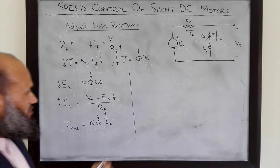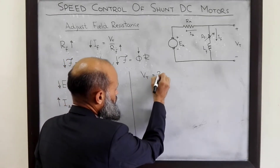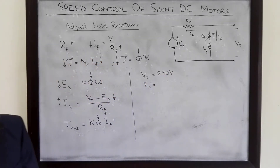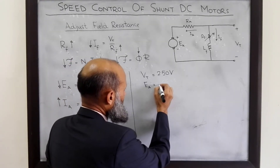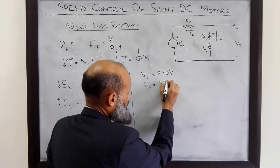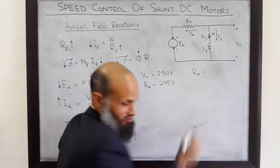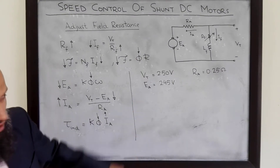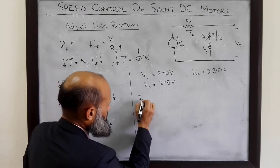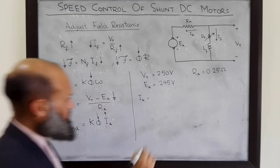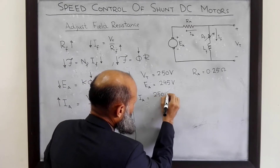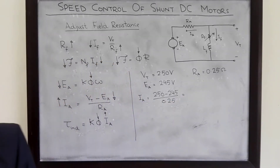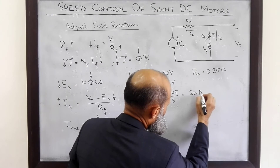Let's consider a machine operating at a terminal voltage of 250 volts, and the generated voltage corresponding to a certain field current is 245 volts. We assume the armature resistance to be 0.25 ohms. Corresponding to this situation, the armature current IA equals (250 − 245) / 0.25, which comes out to be 20 amperes.